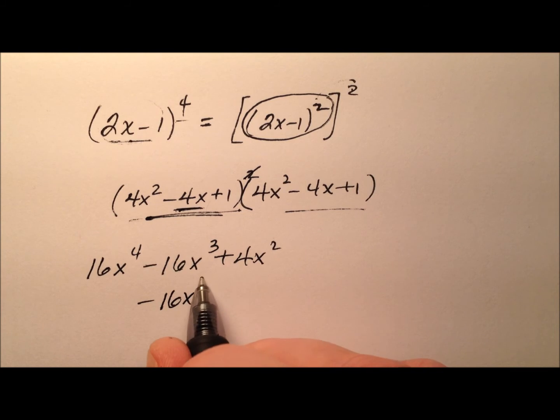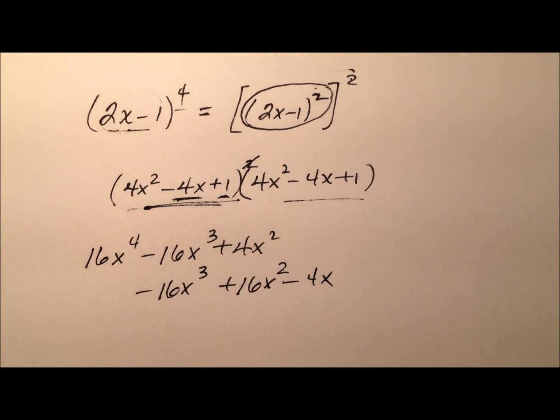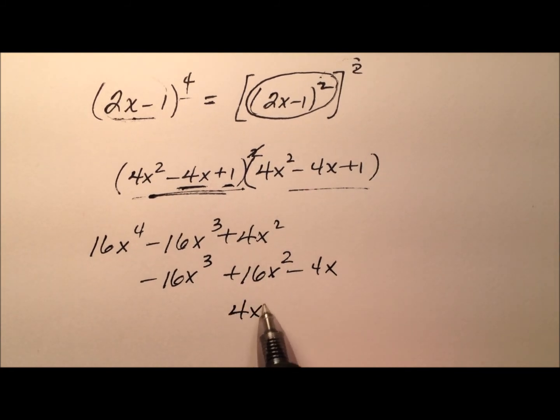So negative 16x cubed plus 16x squared minus 4x, and finally this 1 will give me 4x squared minus 4x plus 1.